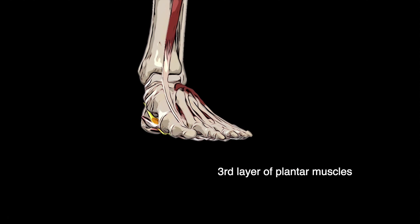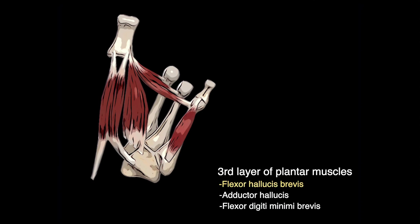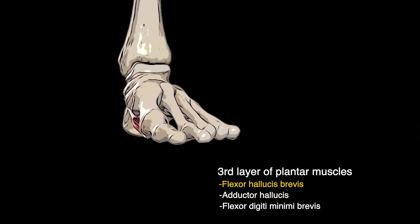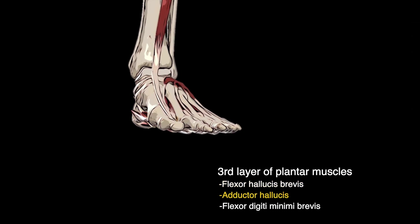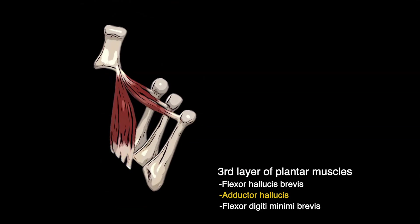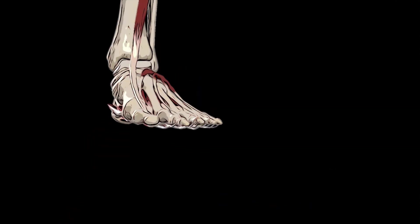The third layer of muscles acts on the first and fifth toes, producing flexion at their metatarsophalangeal joints and abduction at the metatarsophalangeal joint of the first toe. The third layer consists of flexor hallucis brevis, adductor hallucis, and flexor digiti minimi brevis. The flexor hallucis brevis is responsible for flexion of the metatarsophalangeal joint of the first digit. The adductor hallucis adducts the big toe at the first metatarsophalangeal joint and is divided into two heads: its oblique head and transverse head. The flexor digiti minimi brevis flexes the metatarsophalangeal joint of the fifth digit.